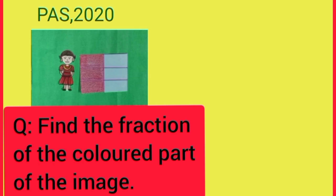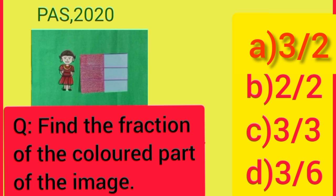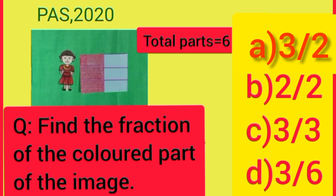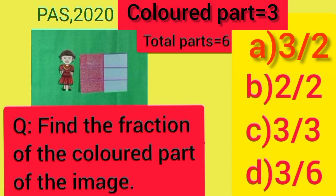It's time for pass preparation. Dear students, find the fraction of the colored part of the image. The fraction of the colored part is colored part upon total part, which means three upon six. So, our answer is option D.